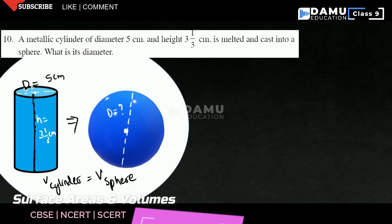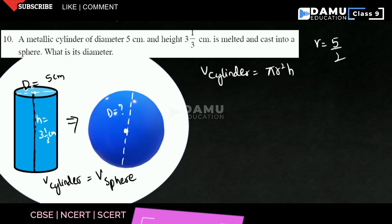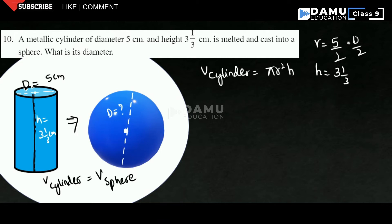For that we need to find the volume of the cylinder. Volume of cylinder will be equal to π r² h — that is base area into h. The radius will be equal to 5 by 2, because this is d by 2. So r = 5/2 and h = 3 and 1/3 centimeters. Then 3 is 9 — 9 plus 1 will be 10 by 3. So this is the value.